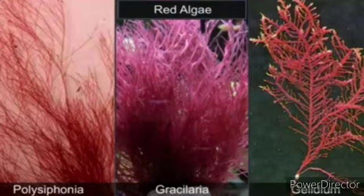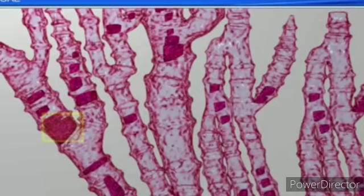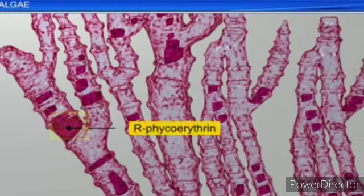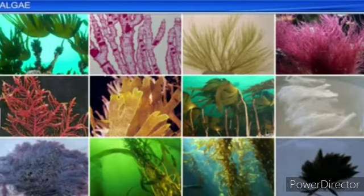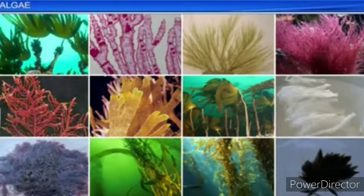The members of Rhodophyceae are commonly called red algae because of the predominance of the red pigment phycoerythrin in their body. The majority of red algae are marine, with greater concentrations found in warmer areas. They occur in both well-lit regions close to the surface and also at great depths in oceans where relatively little light penetrates. Rhodophyceae organisms are present in the deep sea.